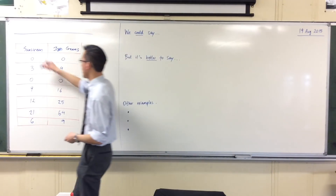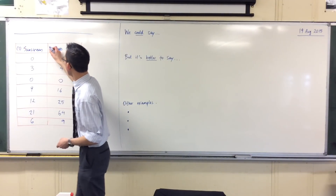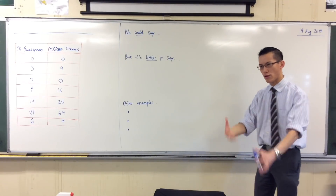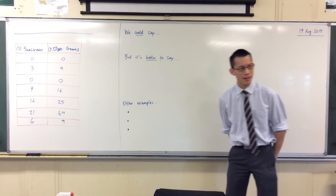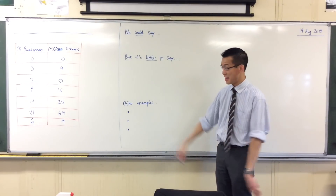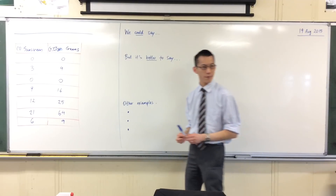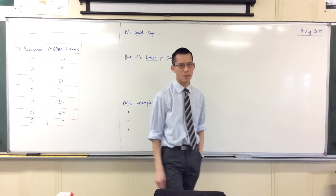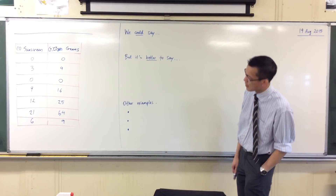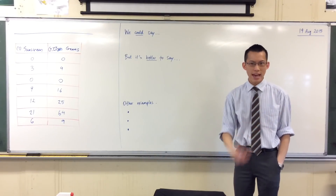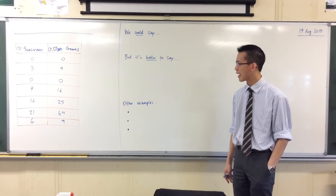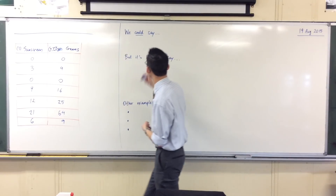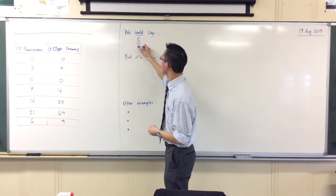So if we call sunscreen S and we call ice creams I, how would we express this relationship? It's not that hard to work out in this imagined week what kind of relationship we can form. For instance, have a look at all of these sunscreen numbers. What do they all have in common? They are all divisible by 3 — they're all multiples of 3. So if I were to take the number of bottles of sunscreen I sold, S, and divide that by 3, I would get a number.